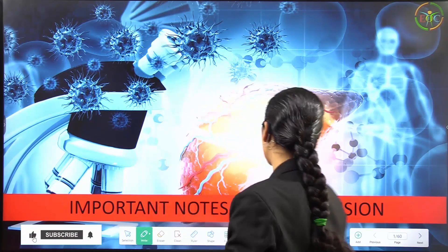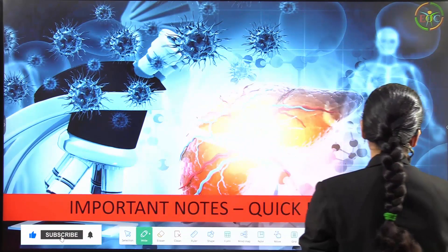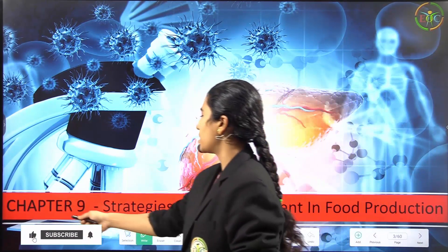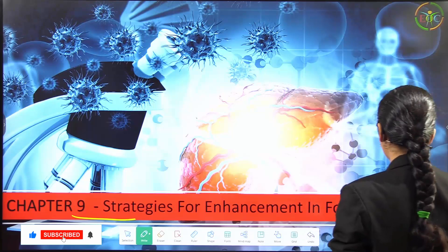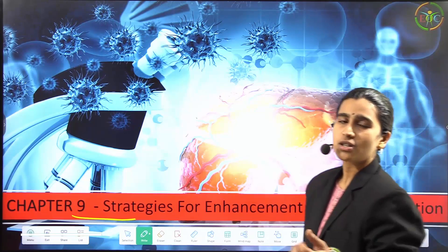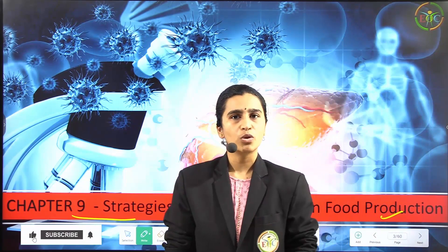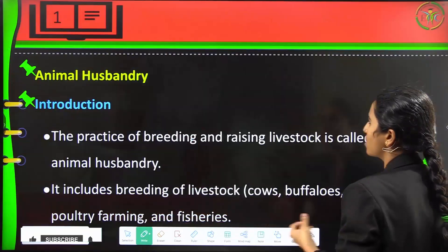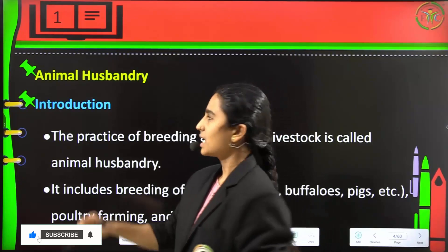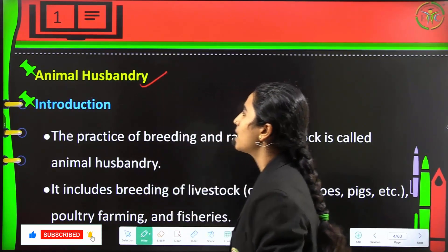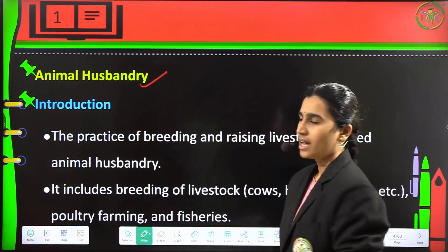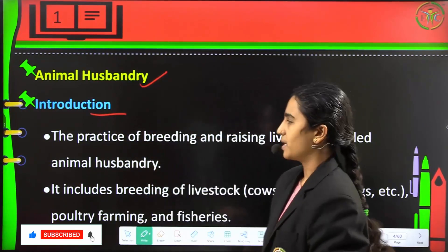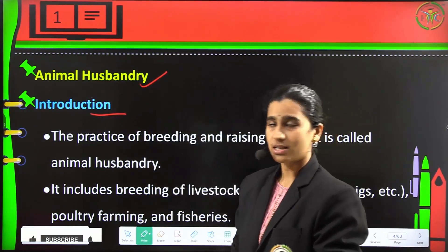In today's class, we will have a quick revision about second POC biology's topic, that is chapter 9 - Strategies for Enhancement in Food Production. As we all know, there is a lot more technology getting improved and enhancement of our foods is also happening.